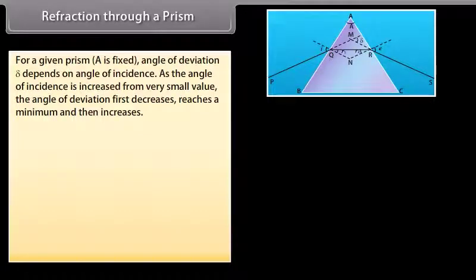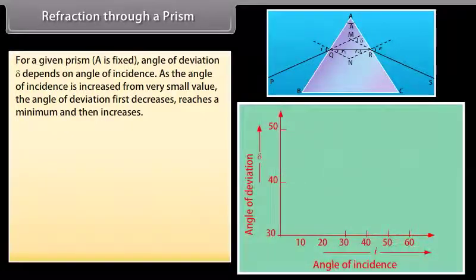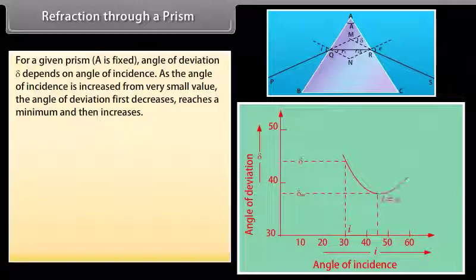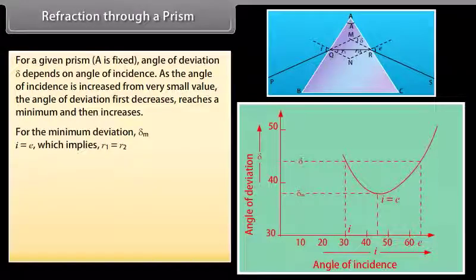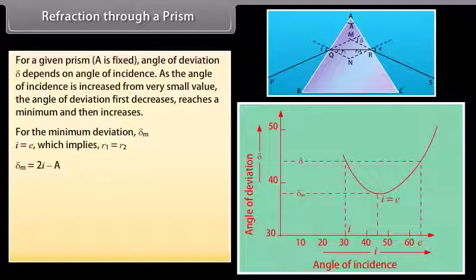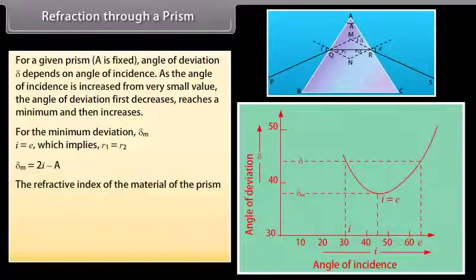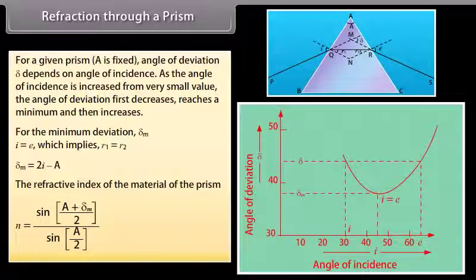For a given prism, A is fixed, and the angle of deviation delta depends on the angle of incidence. As the angle of incidence increases from a very small value, the angle of deviation first decreases, reaches a minimum, and then increases. For minimum deviation, I = E, which implies R1 = R2, and delta_minimum = 2I − A. The refractive index of the prism material is N = sin[(A + delta_minimum)/2] / sin(A/2).